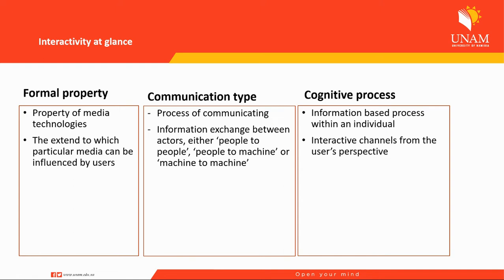But if you go back in the past, even the media deemed as analog today have at some points been referred to as interactive, because interactivity was defined differently during that time. For example, a TV when it first came was regarded as interactive media, or even the telephone itself. The second category is the extent to which a particular media can be influenced by users — more especially, how the content can be influenced by the action of the user.